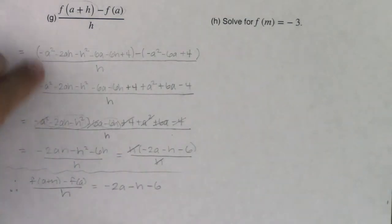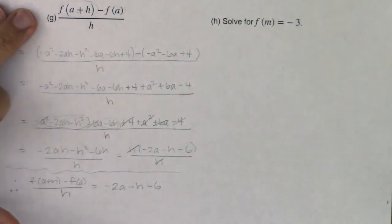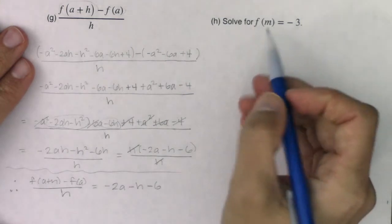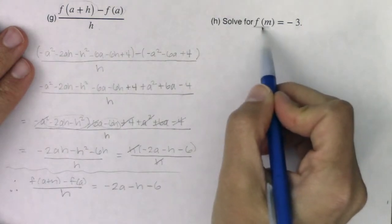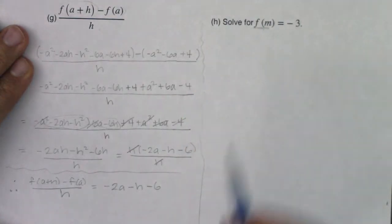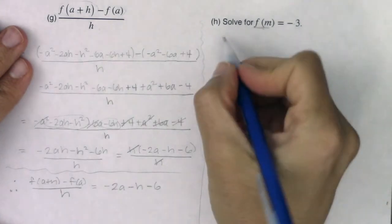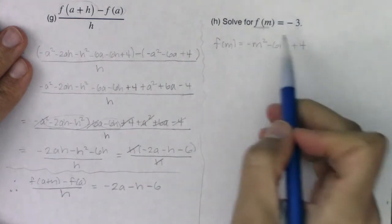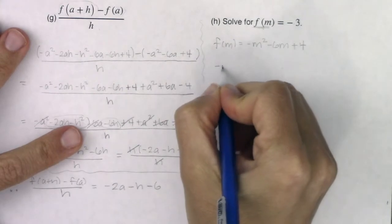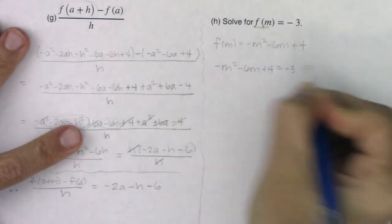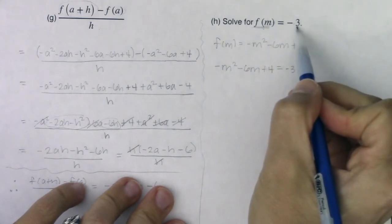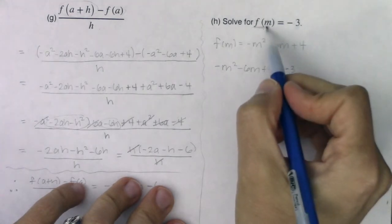For part h, solve f(m) = -3. First find f(m): negative m squared minus 6m plus 4, set equal to negative 3. This is different — they didn't give me the independent variable's value, but they did give me the dependent variable's value. They gave me the y coordinate but not the x coordinate. Since it's a quadratic, I have three methods: factor, complete the square, or use the quadratic formula.